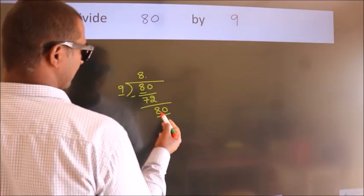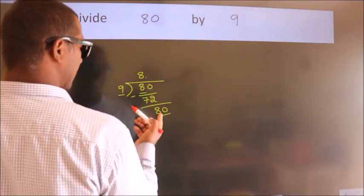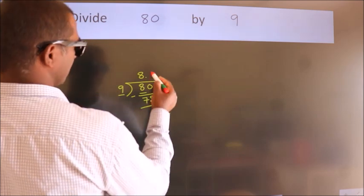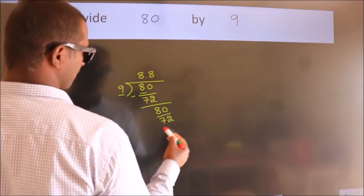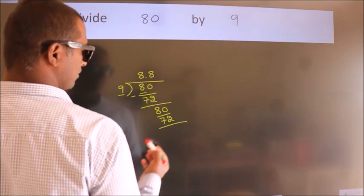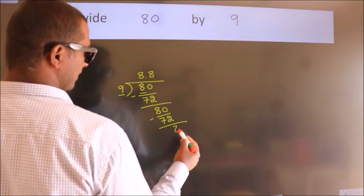So, 80. A number close to 80 in 9 table is 9 times 8, 72. Now, we subtract. We get 8.